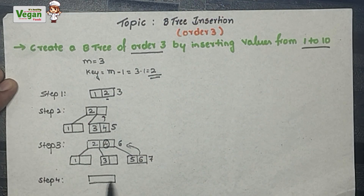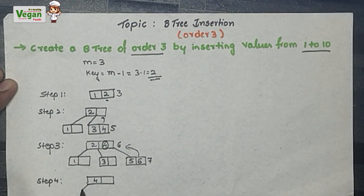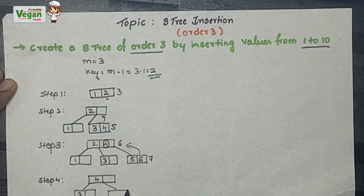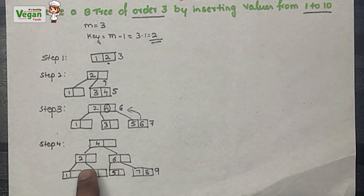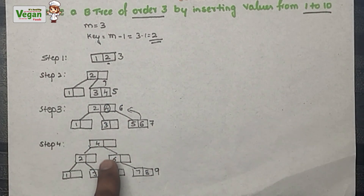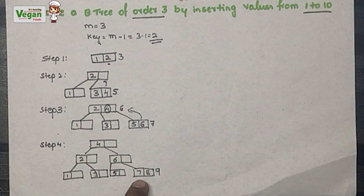4 moves up to become the new root. Then 2 and 6 are compared — 2 is less than 4, so 2 is written on the left and 6 on the right. Now: 1 is less than 2; 3 is greater than 2 but less than 4; 5 is greater than 4 but less than 6; and 7 is greater than both 4 and 6.